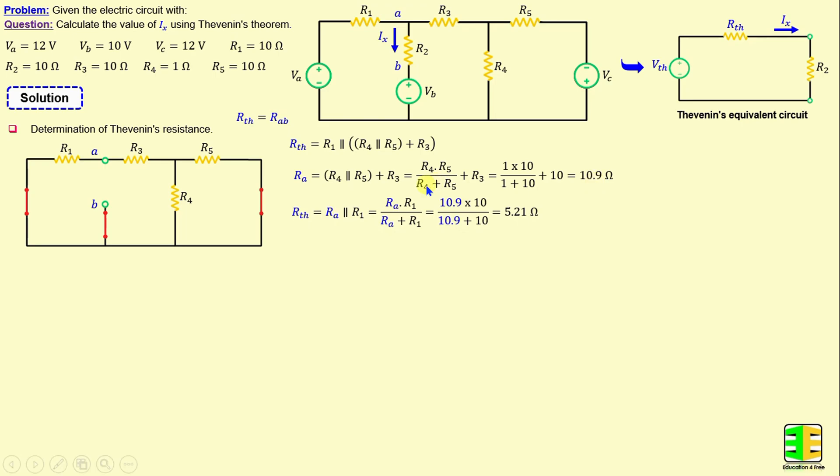RTH is equal to the parallel combination of Ra and R1. Therefore, RTH can be calculated using the following formula: Ra times R1 over Ra plus R1. If we replace Ra and R1 with their numerical values, we obtain RTH is equal to 5.21 ohms.